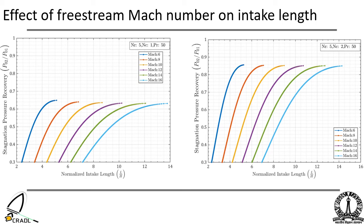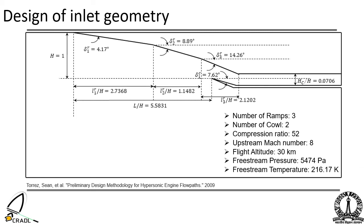To compare the performance of single cowl with two cowl geometry, a test case was considered. The number of ramps was considered as three with number of cowls as two. The compression ratio was considered to be 52, and the flow condition was calculated based on the flight altitude of 30 kilometers. Based on the optimization code, the geometry is generated as shown in figure. This geometry is similar to Taurus design.